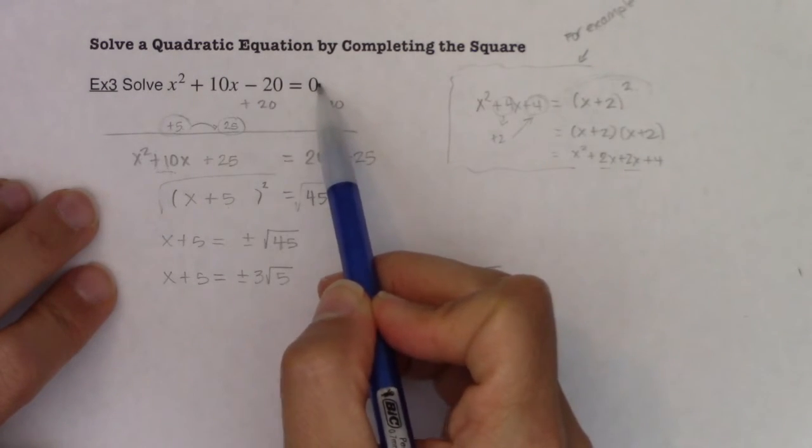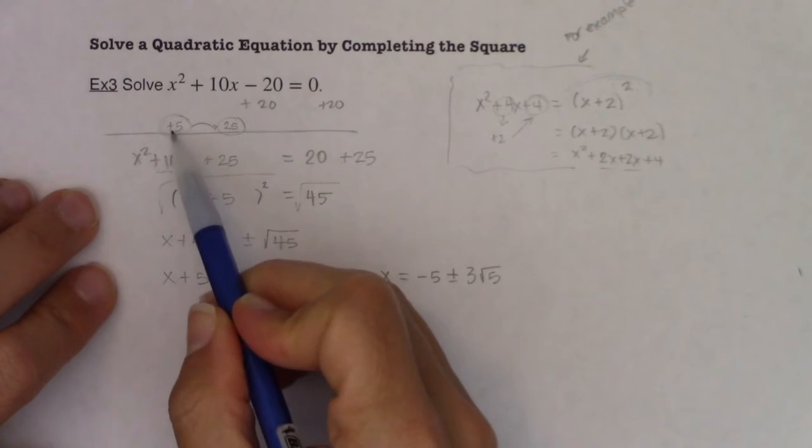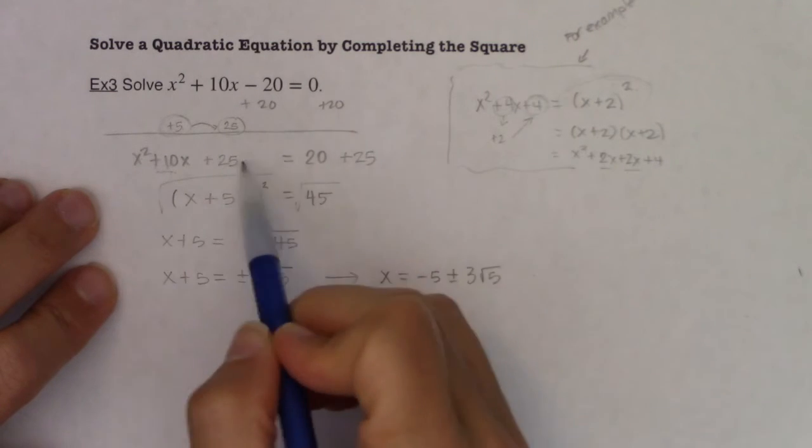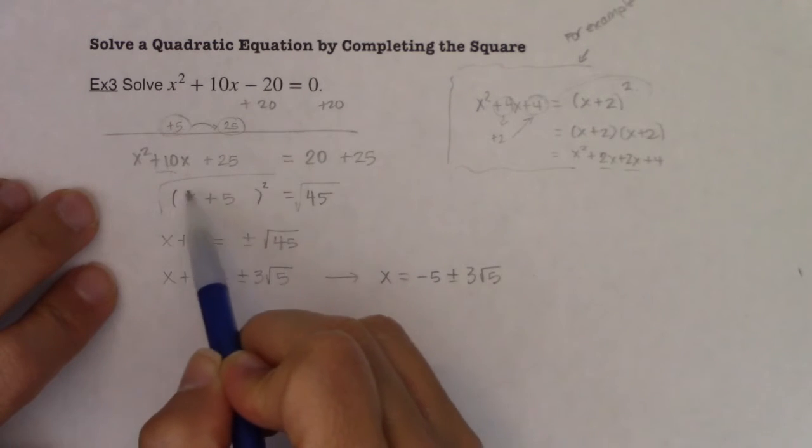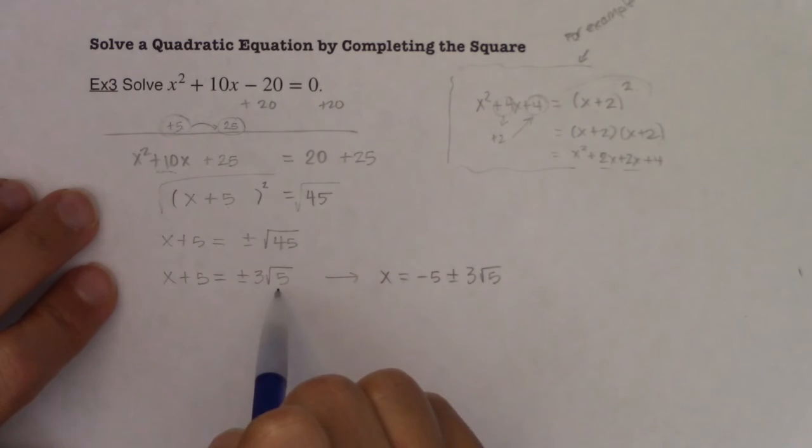you're going to move the constant over, take half of the linear term, square it, add that number to both sides, rewrite your trinomial as a perfect square binomial, and then use the square root property.